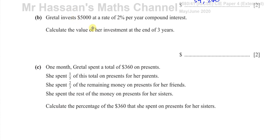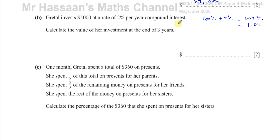The next question is actually about compound percentages. Gretel invests $5,000 at a rate of 2% per year compound interest. Calculate the value of her investment at the end of three years. The way I like to do it: this $5,000 is going to increase by 2% every year, so an increase of 2% means 100% plus 2% = 102% = 1.02. You multiply by 1.02 every year. Because it increases for three years, you have 1.02 to the power of 3.